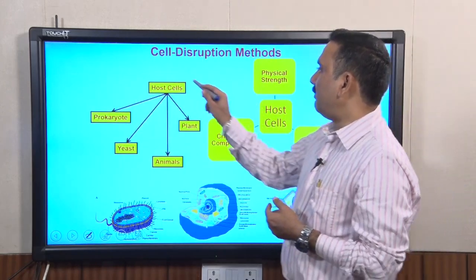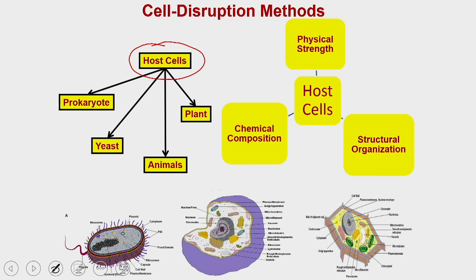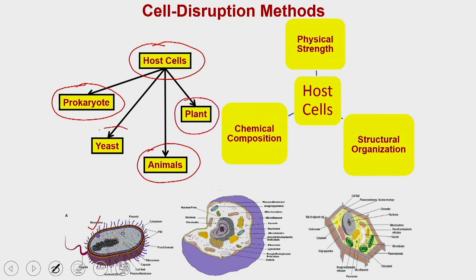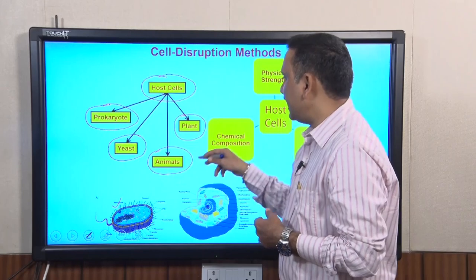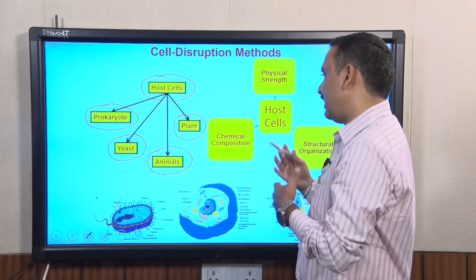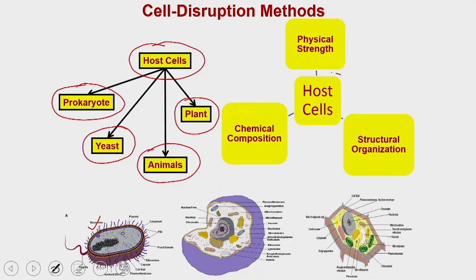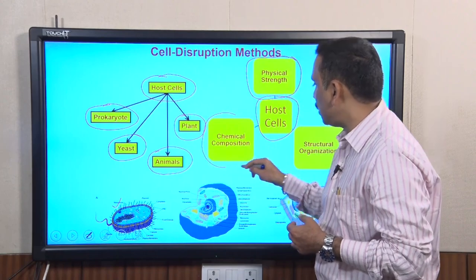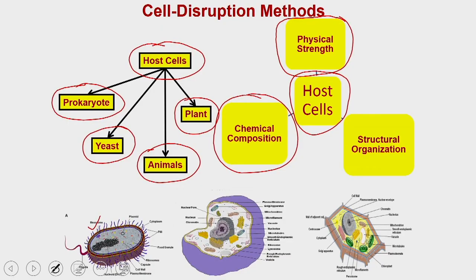We can use prokaryotic host cells such as bacteria, or eukaryotic hosts such as animal, plant, or yeast. All these host strains vary in terms of their physical strength — the cell has different levels of physical strength to be broken down — as well as varying chemical composition, which can be exploited in disruption processes.